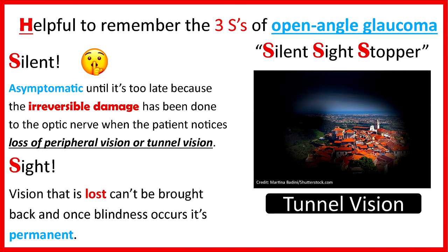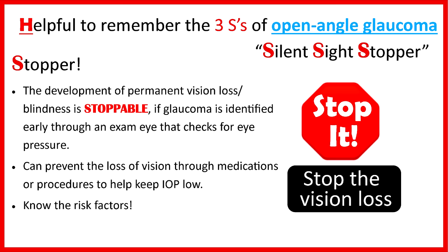H is to help remember the three S's of open angle glaucoma. Silent — the patient is asymptomatic until it's too late because irreversible damage has been done to the optic nerve by the time they notice loss of peripheral vision and tunnel vision. Sight — vision loss can't be brought back, and once blindness occurs, it is permanent, caused by increased intraocular pressure damaging the optic nerve. Stopper — permanent vision loss and blindness is stoppable and avoidable if glaucoma is identified early through an eye exam that checks eye pressure, and we can prevent vision loss through medications or procedures that keep IOP low.